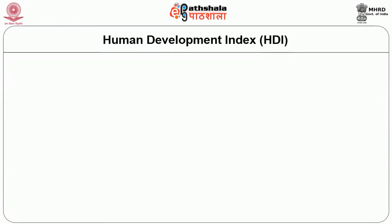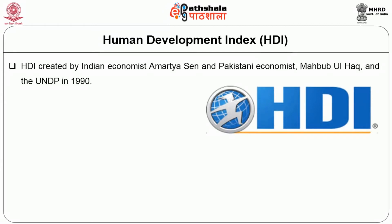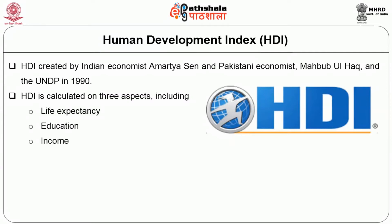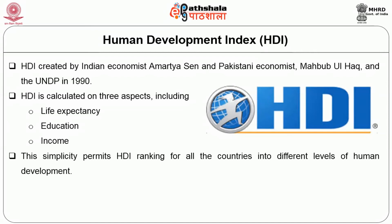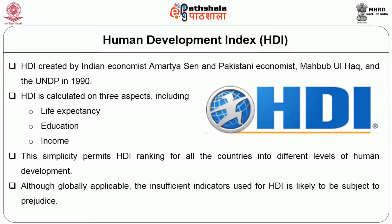The Human Development Index, HDI, was created by Indian economist Amartya Sen, Pakistani economist Mahbub ul Haq, and the UNDP in 1990. HDI is calculated on three aspects: life expectancy, education, and income, using single indicators for each aspect. This simplicity permits HDI ranking for all countries into different levels of human development. Although globally applicable, the insufficient indicators used for HDI are likely to be subject to bias.